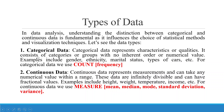Let's see the data types. The first one is Categorical Data. Categorical data represents characteristics or qualities. It consists of categories or groups with no inherent order or numerical value. Examples include gender, ethnicity, marital status, and types of cars. For categorical data, we use count — that is, frequency. We can count how many male employees there are, how many female employees there are, how many are married, how many are unmarried.